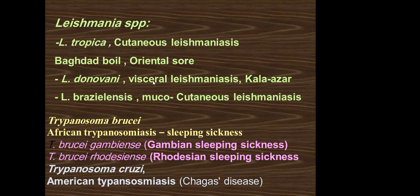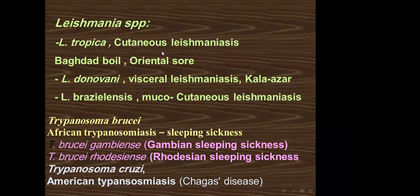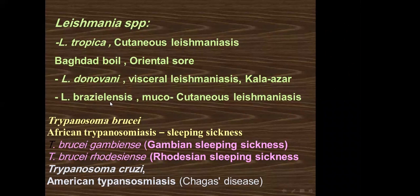For all Leishmania species, the promastigote is the infective stage and the amastigote is the diagnostic stage. Infection occurs with the bite of the sand fly, which is the invertebrate host. The specific sand fly vector differs: Phlebotomus papatasi for L. tropica, Phlebotomus argentipes for L. donovani, and Lutzomyia for L. braziliensis, which is prevalent in Latin America.